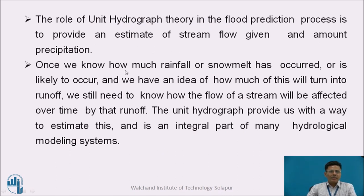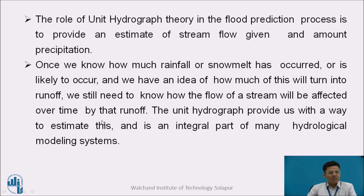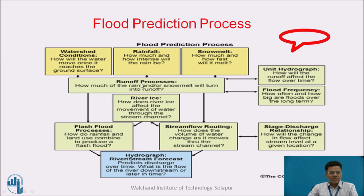The role of unit hydrograph theory in the flood prediction process is to provide an estimate of stream flow given an amount of precipitation. If we have a watershed, its area and its rainfall records spread over time, we should be able to convert that information into a probable stream flow varying with time. Once we know how much rainfall or snowmelt has occurred or is likely to occur, and we have an idea of how much will turn into runoff, we still need to know how the flow of the stream will be affected over time by that runoff. The unit hydrograph provides a way to estimate this and is an integral part of many hydrological modeling systems.